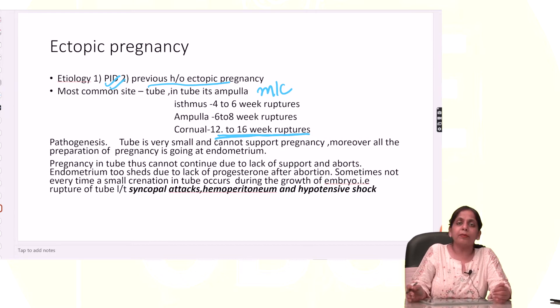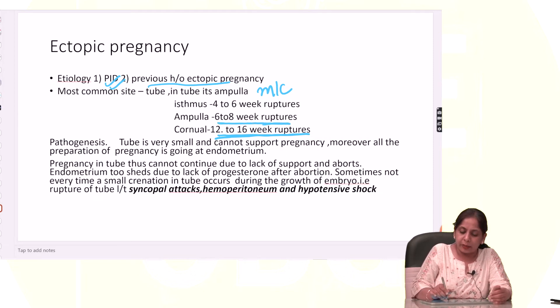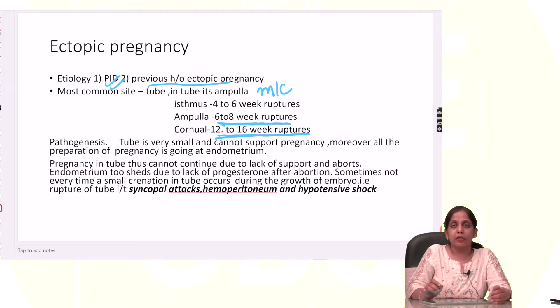Ampullary pregnancy is the most common, and it goes up to 6 to 8 weeks.